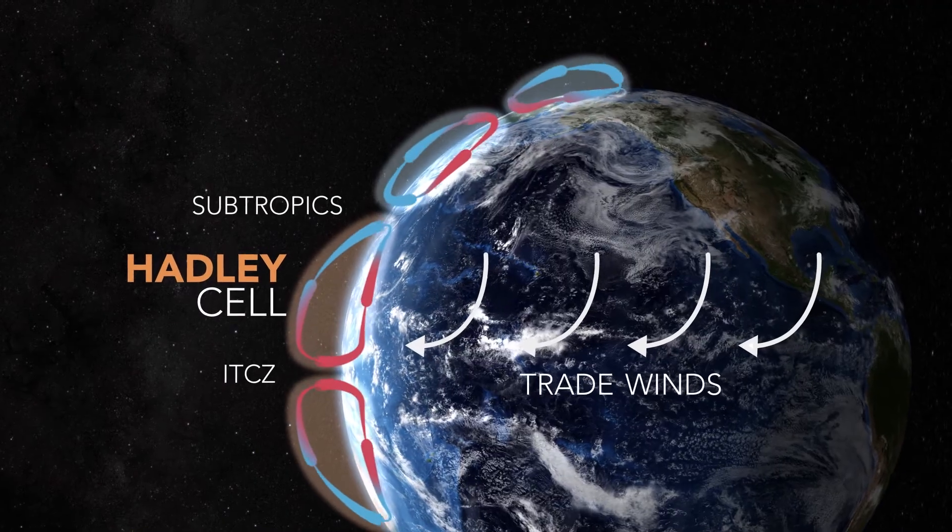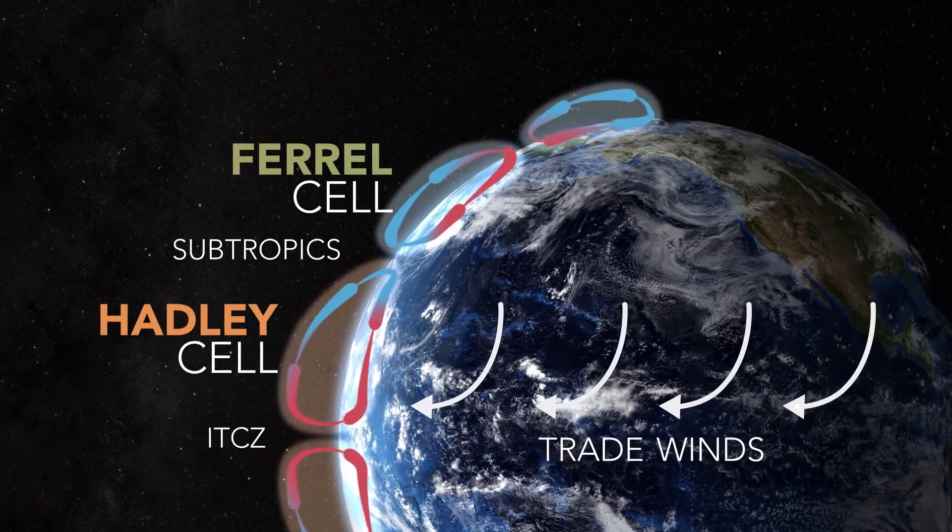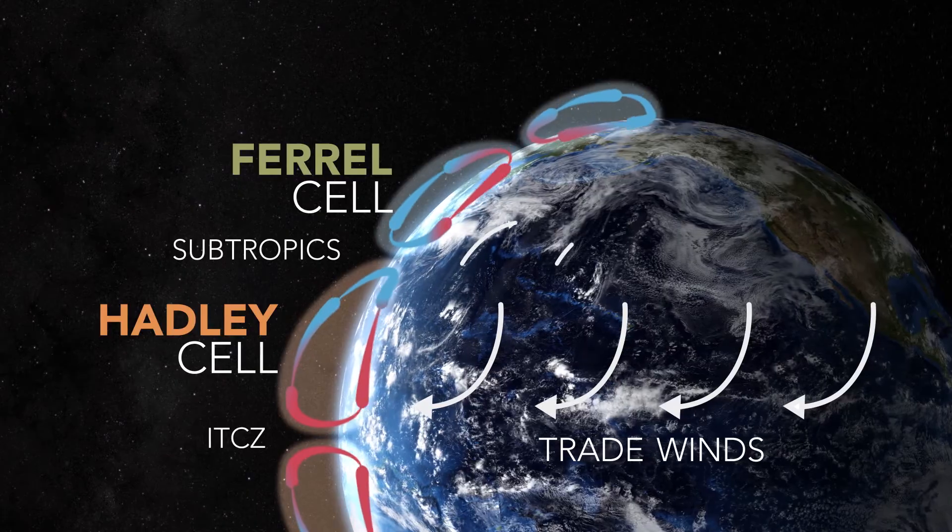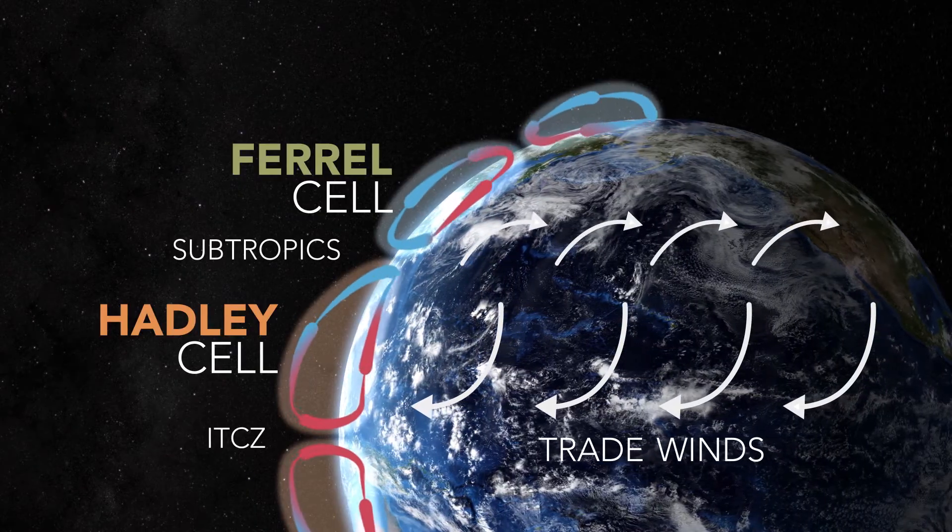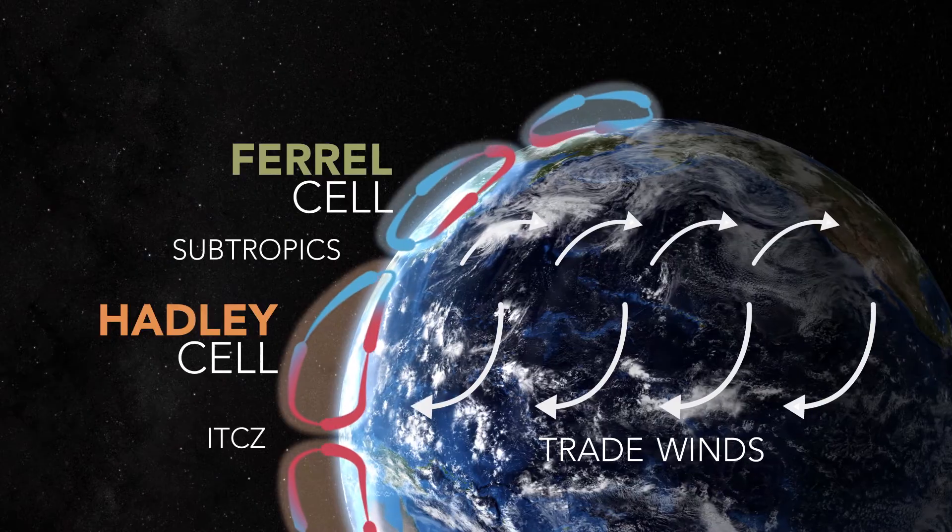The second cell, in the mid-latitudes, is called the Ferrel cell. The Ferrel cell causes westerly winds in the mid-latitudes, and is the reason why we look to the west when we make weather forecasts.